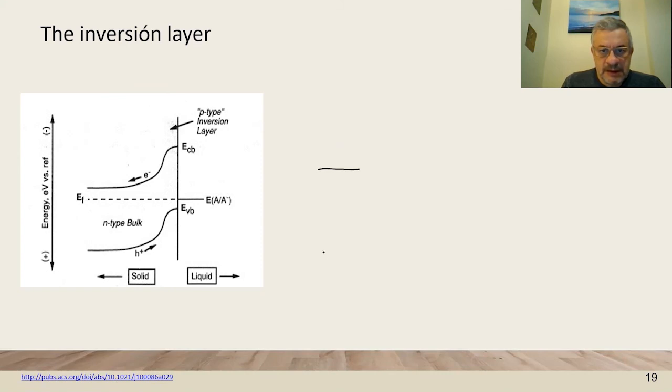We consider n-type semiconductor and here a redox electrolyte that is situated very deep close to the conduction band. What is going to happen is that we will have this band bending at the surface and also the valence band.